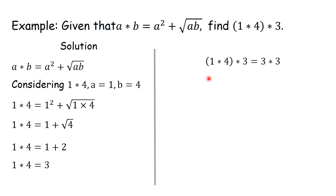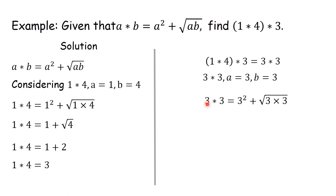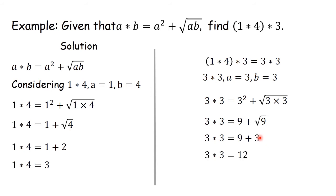Now that we have obtained the value of 1★4 as 3, we substitute it in and get 3★3. For 3★3, A is 3 and B is 3. Substituting gives 3 squared plus the square root of 3 times 3. 3 squared gives us 9, and the square root of 3 times 3 gives us the square root of 9. So we have 9 plus the square root of 9. The square root of 9 is 3, so 9 plus 3 gives us 12. Therefore (1★4)★3 is equal to 12.